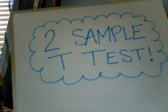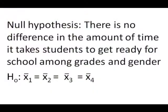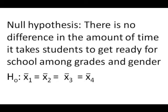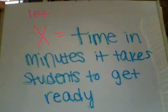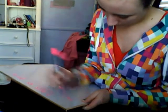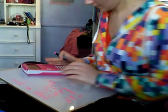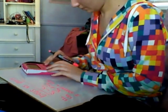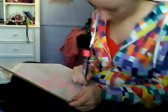Now that we have met the conditions, we can follow through with a two-sample t-test that will help us determine if there is in fact a difference between the genders and grades. We will be testing two hypotheses here. The first, the null hypothesis, states that there is no difference in the two categories we are comparing, and the second, the alternative, states that there is. Our variable x stands for the time in minutes it takes the students to get ready. We went through and ran 12 tests, comparing underclassmen to upperclassmen, males to females, each grade to the others, and then males and females within each grade.